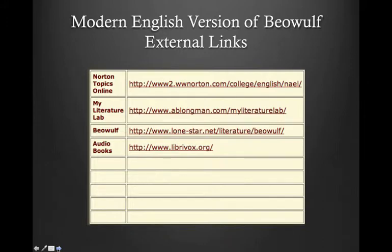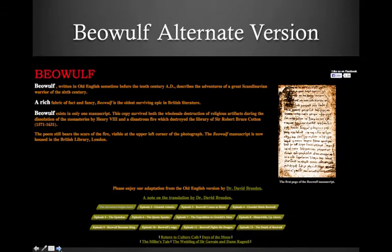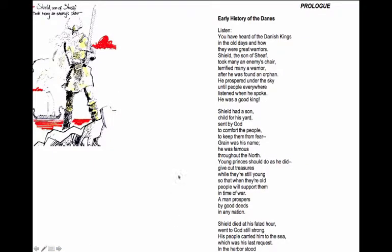In addition to the side-by-side version of the text on my literature lab, there's also a nice English language version under external links on your website. Here's what the facing page looks like — you click on the first button at the bottom and up will pop the prologue in modern English. It's a good idea to take a look at this, but it is definitely not a substitute for reading the translation in the book.